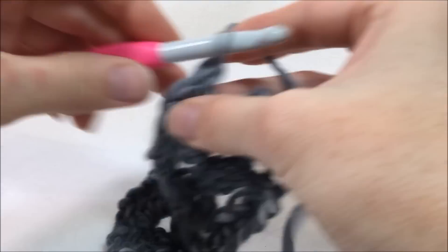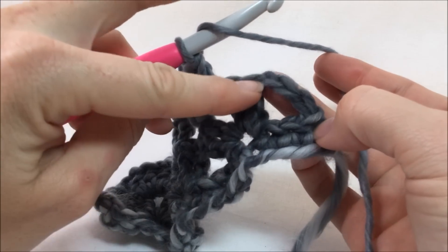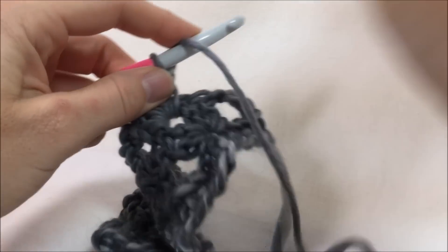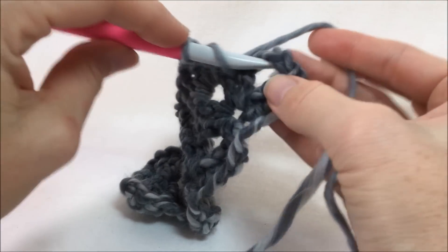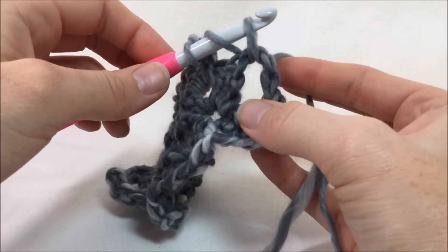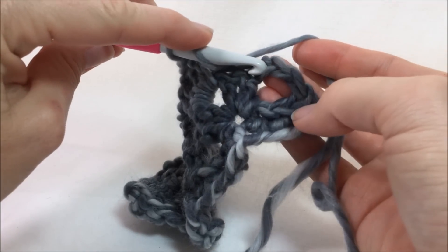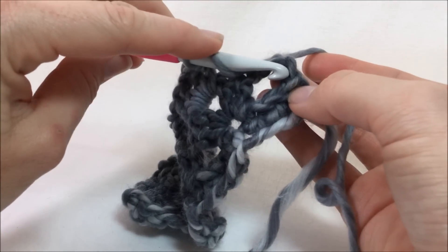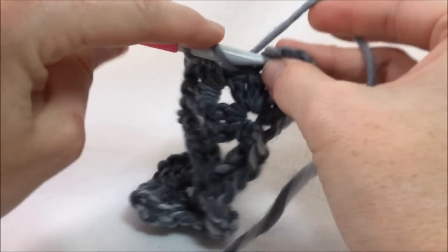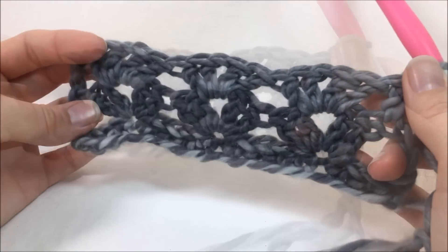But we're almost at the end here. So again we do another fan in the next chain one space. At the very end we're going to do a double crochet, and we're doing it in the top of our chain three, because remember we're chaining three at the beginning of the row, so we don't want to go into this space and do it because it can make it look a little funny along your edge. So instead you're going to catch a loop at the top of your chain three, so we have one chain, two chain, three chain, and do our double crochet there. And now we have our stacked v's.